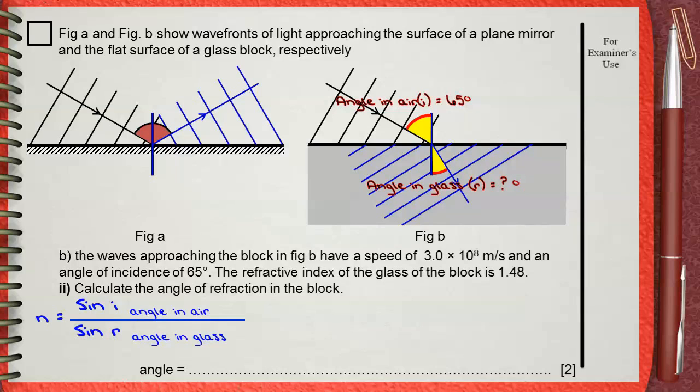Let's modify this to find sine of the angle of refraction, which is the angle in the glass. Sine R will equal sine I in air divided by the refractive index.